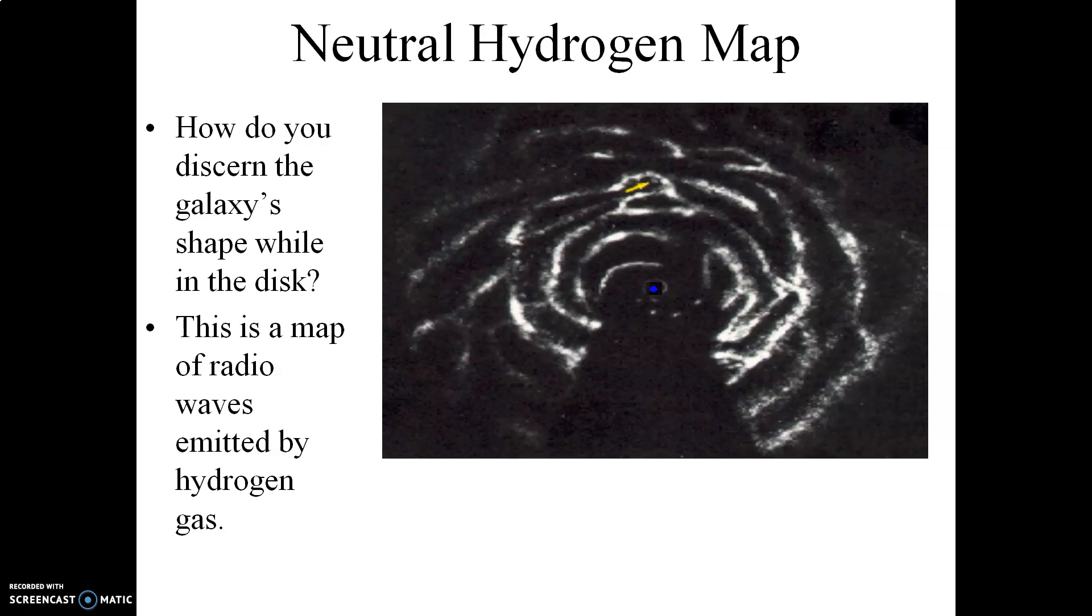Now how do you actually discern the galaxy's shape while you're in the disk of the galaxy itself? Well, one thing that we can do is we can map out the radio waves that are emitted by hydrogen gas, and that's specifically what this radio map refers to. The location of the sun on this map is here. In this direction is the constellation of Sagittarius, so in this direction like so is the center of the Milky Way.